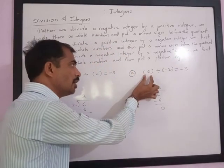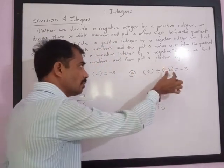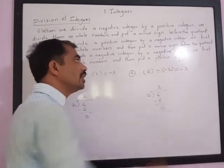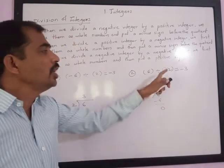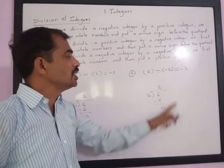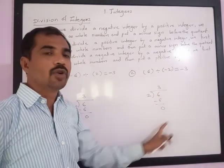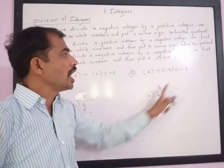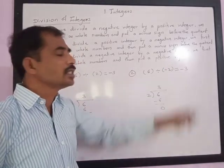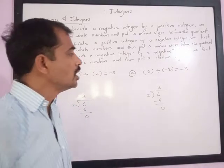When we divide a positive integer by a negative integer, we divide them as if we are dividing whole numbers and put a minus sign before the quotient.